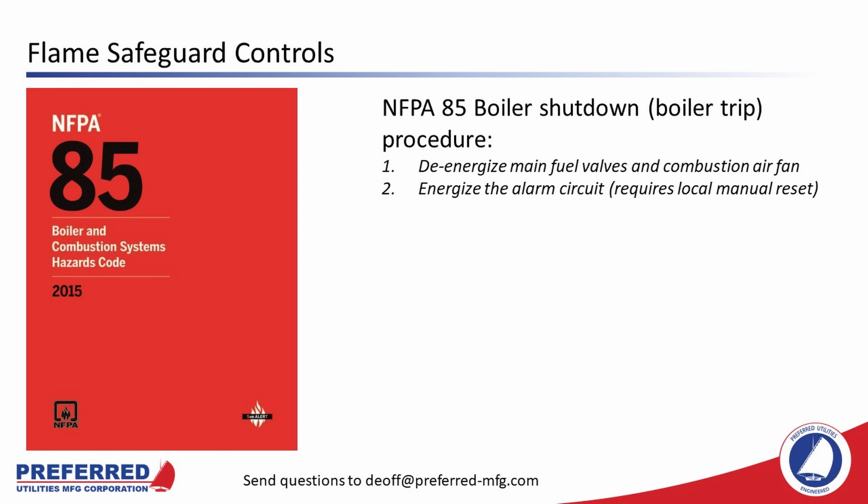On a boiler trip — a more serious situation like a flame-out or a gas pressure switch trip — the flame safeguard controller de-energizes the main fuel valves and the combustion air fan and energizes the alarm circuit. This requires a local manual reset: an operator must go out to the boiler and make sure it's safe to light off again before hitting the reset button. The boiler will trip if the flame scanner quits seeing flame or if one of the boiler limit switches opens. On a boiler trip, NFPA mandates the flame safeguard shut down everything — no more fuel, no more air — and sound the alarm.